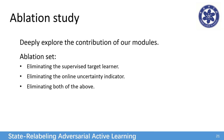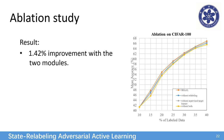We also conduct an ablation study to analyze the target learner and the indicator by eliminating the two modules. The result on the CIFAR dataset shows that both paths contribute to our active learning model, and they achieve a 1.4% improvement for active learning.